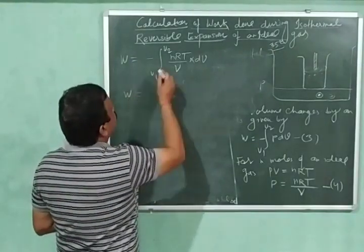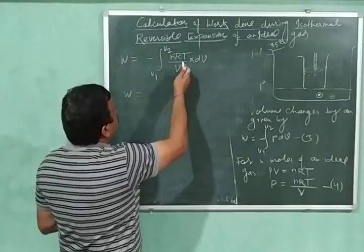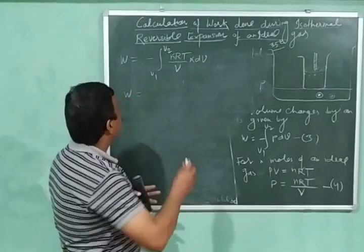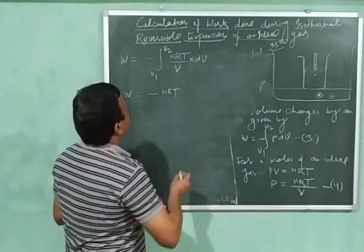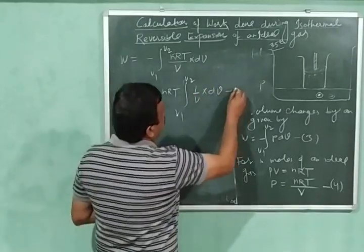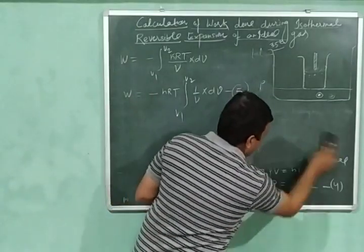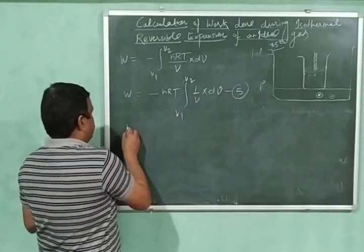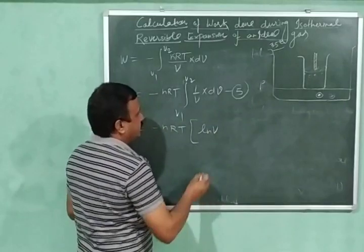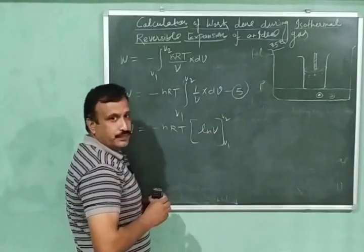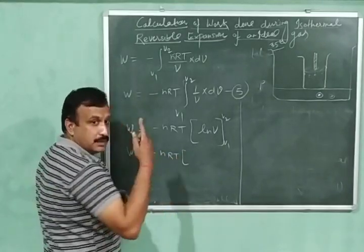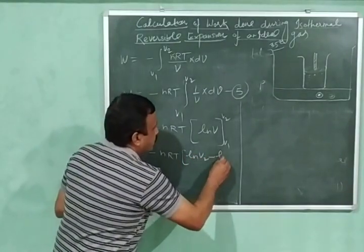Since the number of moles, the gas constant, and the temperature are all constants (temperature is held constant because the process is isothermal), nRT comes out of the integral sign. So w = −nRT ∫(v1 to v2) (1/v)·dv, let this be equation number five. We know that the integration of 1/v·dv equals the natural log of v. So w = −nRT [ln v] from v1 to v2, which gives w = −nRT (ln v2 − ln v1), that is equation number six.